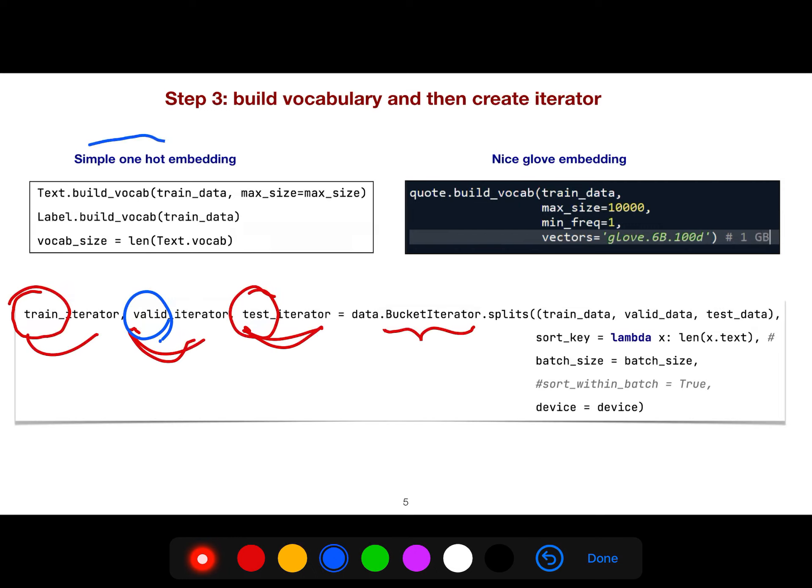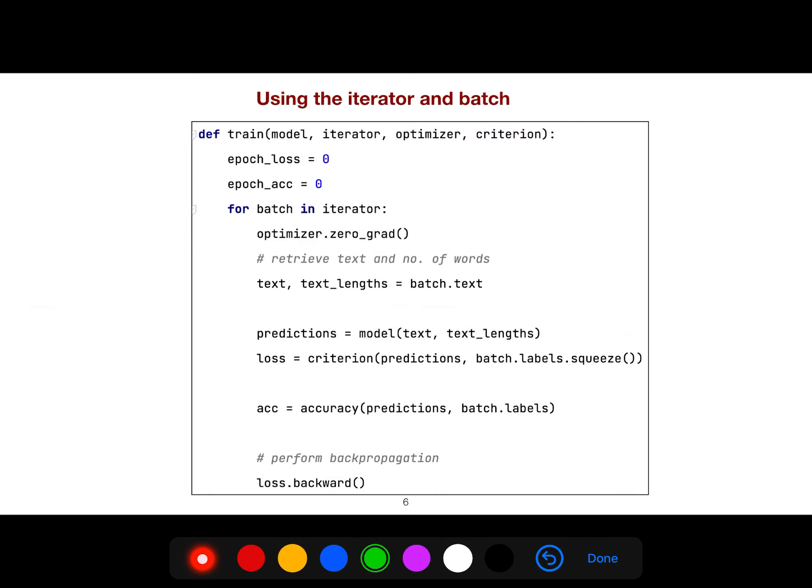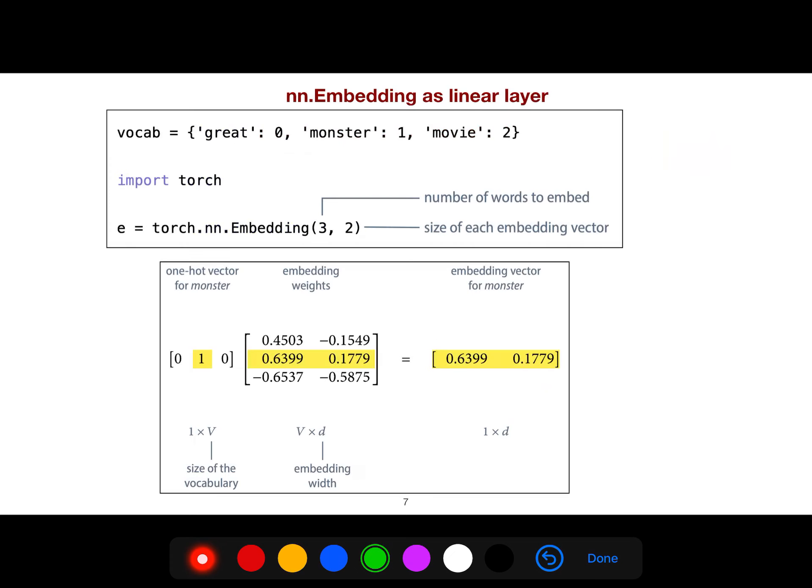You could either use simple one-hot embedding or you could use nice GloVe embedding by Professor Christopher Manning invented at Stanford. Very beautiful word-to-vec idea. So this is the bucket iterator. It splits and then you're now ready. For example, we have the batch in the iterator. You can use batch.text, you can use batch.labels because our dataset is just text and labels.